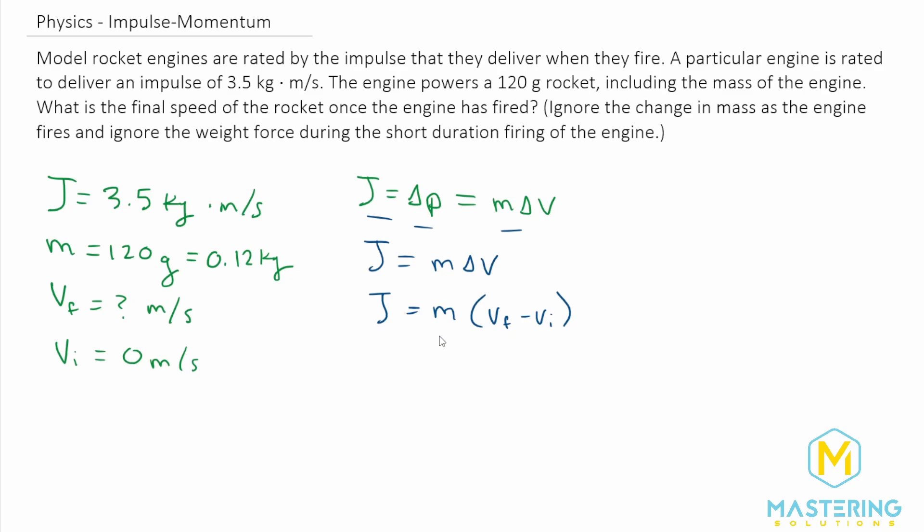So now that we have it all broken up, now we can solve for the final velocity here. So if we divide both sides by mass, we have V final minus V initial is equal to J over M, or the impulse divided by the mass.